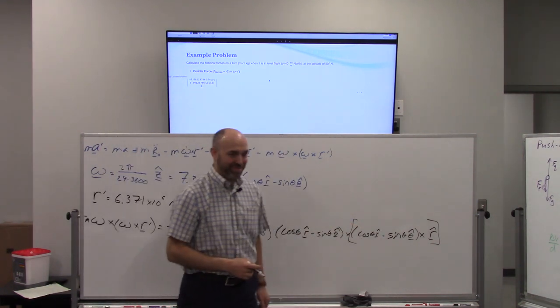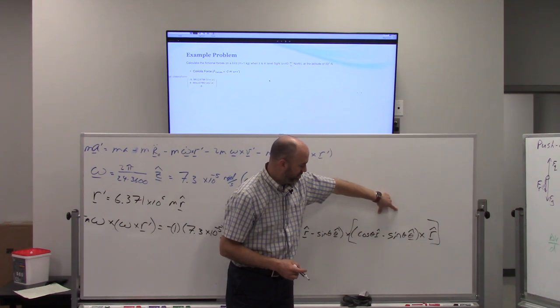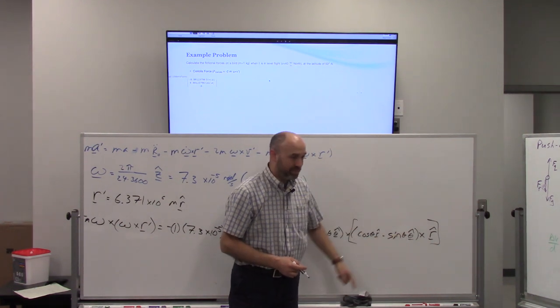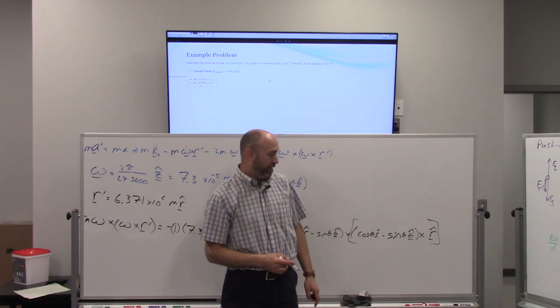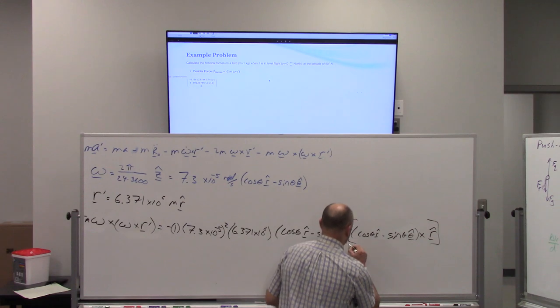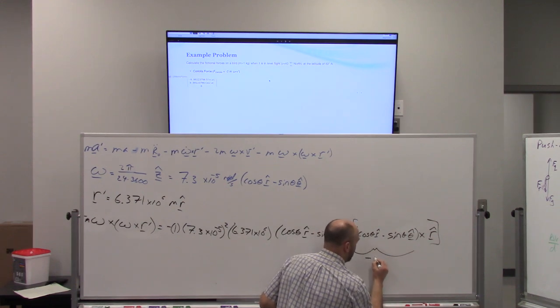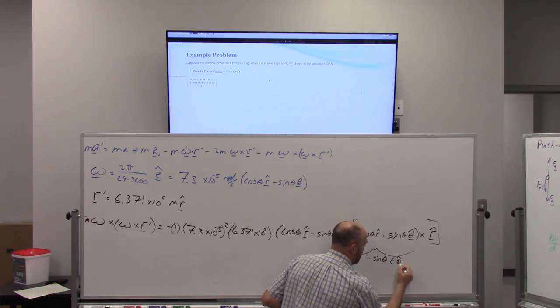So what's this cross product here? Do the first one. Zero. R cross R, zero. Theta cross R? Negative phi. Negative phi. So this first piece here is going to give us negative sine theta times negative phi hat.